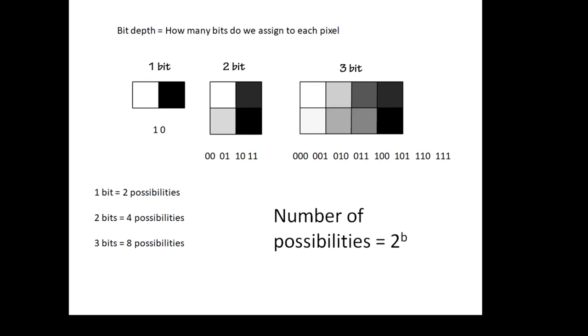Now bit depth: how many bits do we assign to each pixel? So far in Percy the panda, I had one bit per pixel. If there's one bit, there are two possibilities—it's either a one or a zero. If I use two bits, there are four possibilities: white, light gray, dark gray, and black.